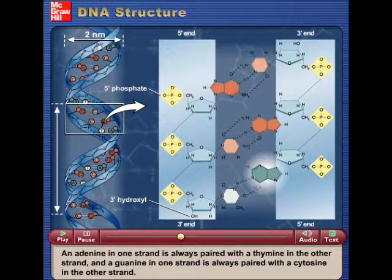An adenine in one strand is always paired with a thymine in the other strand, and a guanine in one strand is always paired with a cytosine in the other strand.